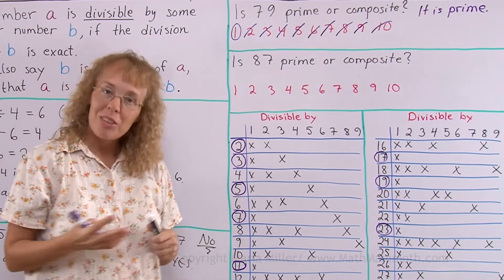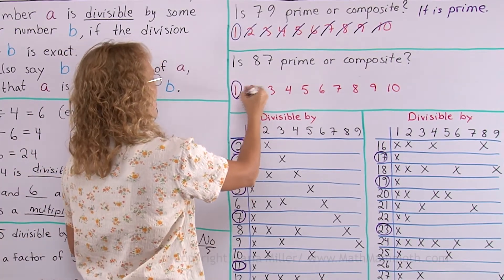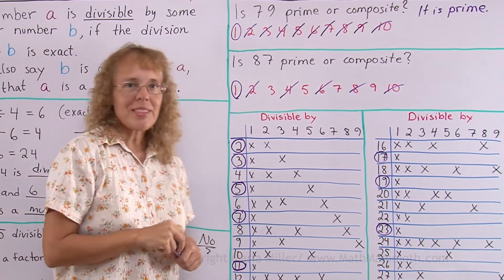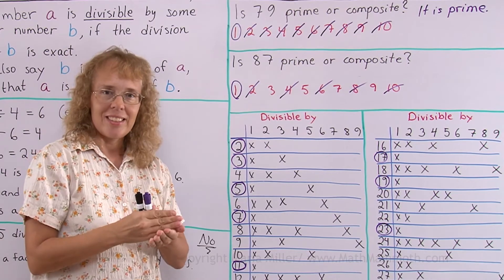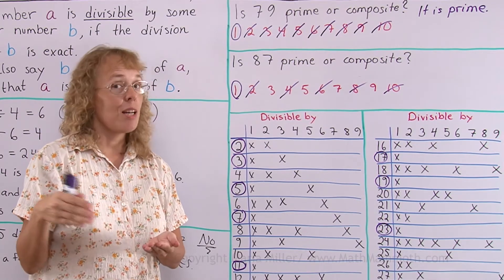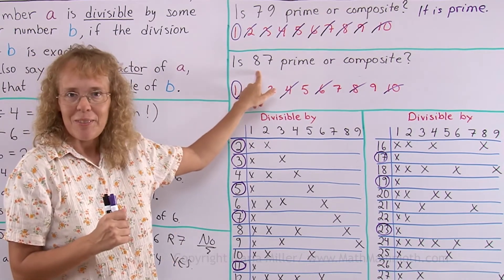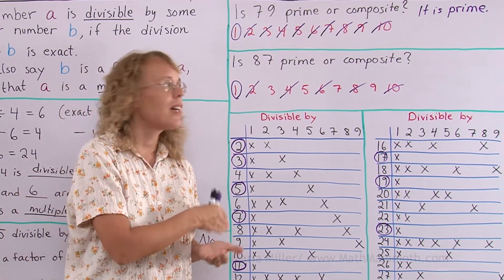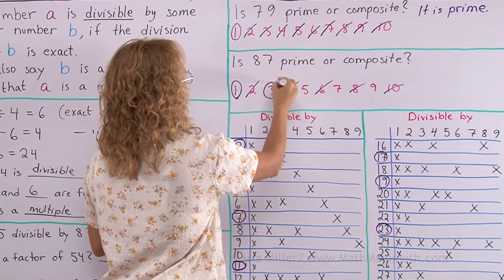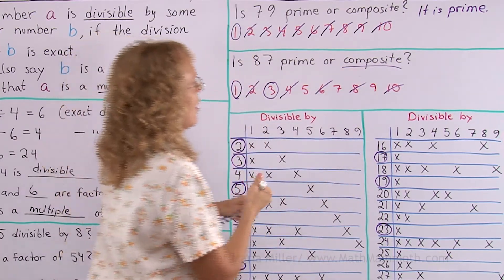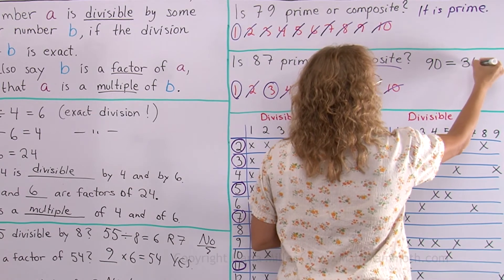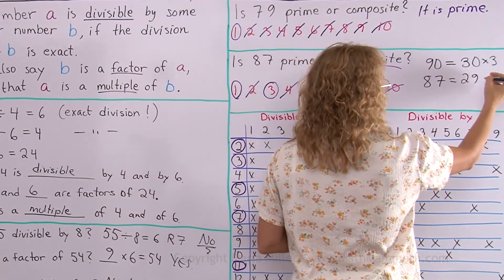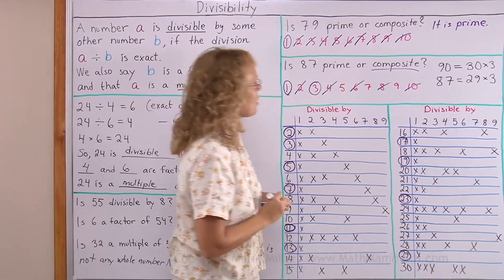Is this number prime or composite? We do the same thing. It is divisible by 1 because every number is. Now, it's not an even number so it's not divisible by 2 or 4 or 6 or 8 or 10. Is it divisible by 3? Well, I know a number nearby. 90 is divisible by 3. 90 is 3 times 30. And this is just 3 less. And numbers divisible by 3. Every third number is divisible by 3. So 90, 87, 84, 81. So yes, it is divisible by 3. So it is composite. It's not prime. Let me write here. 90 equals 30 times 3. 87 is just 3 less. So it is 29 times 3. It is composite.